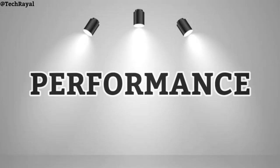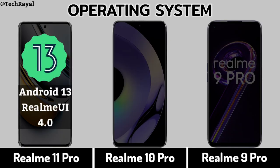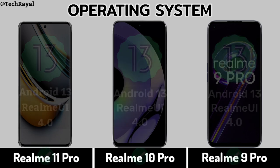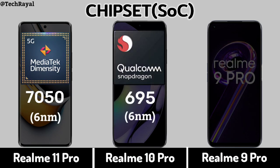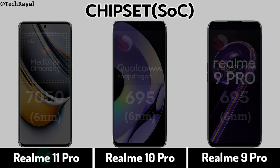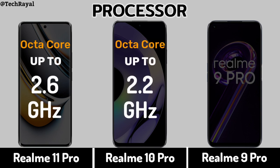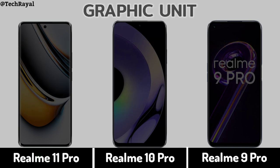Now for performance: operating system, chipset, processor, and graphic unit.